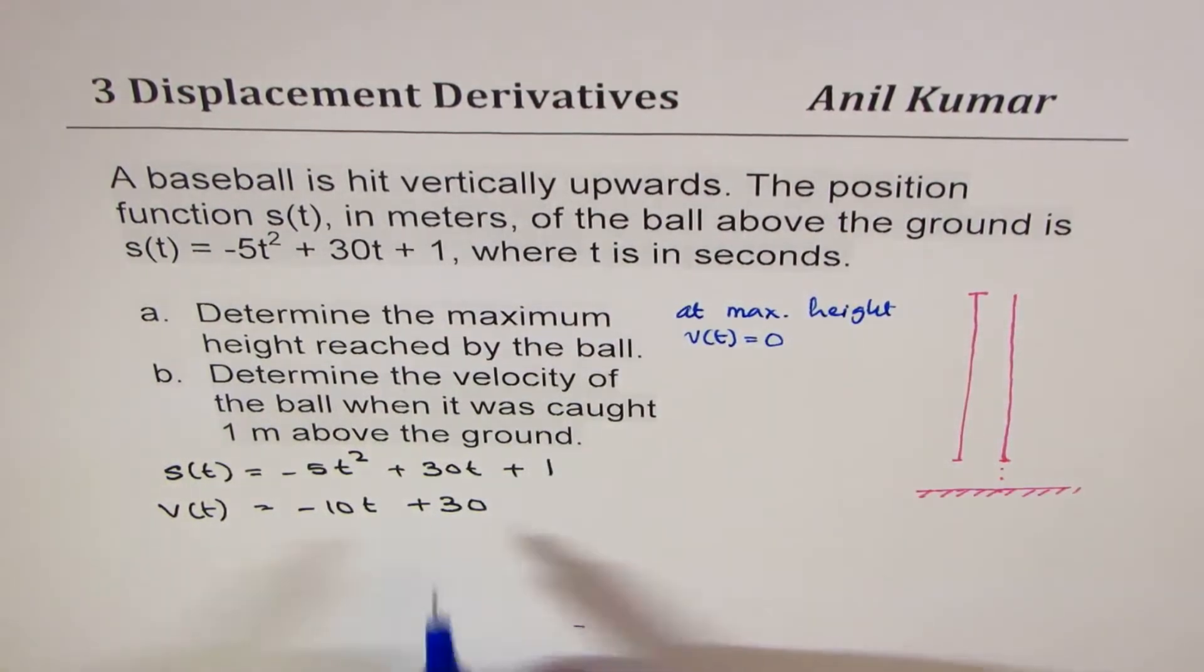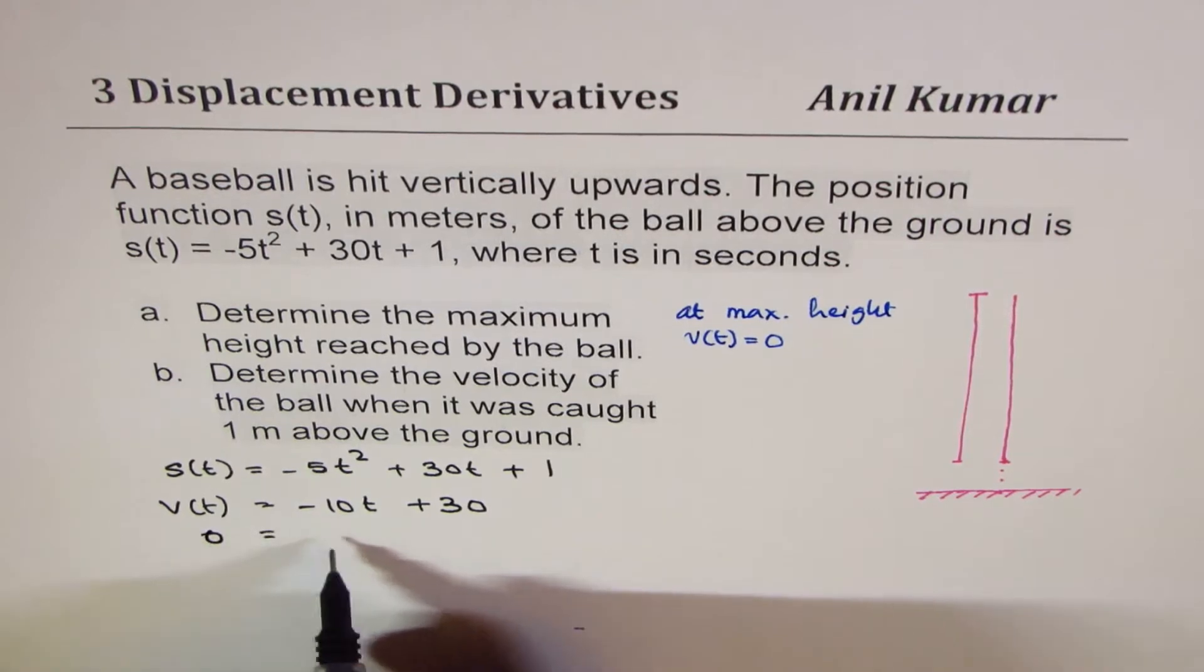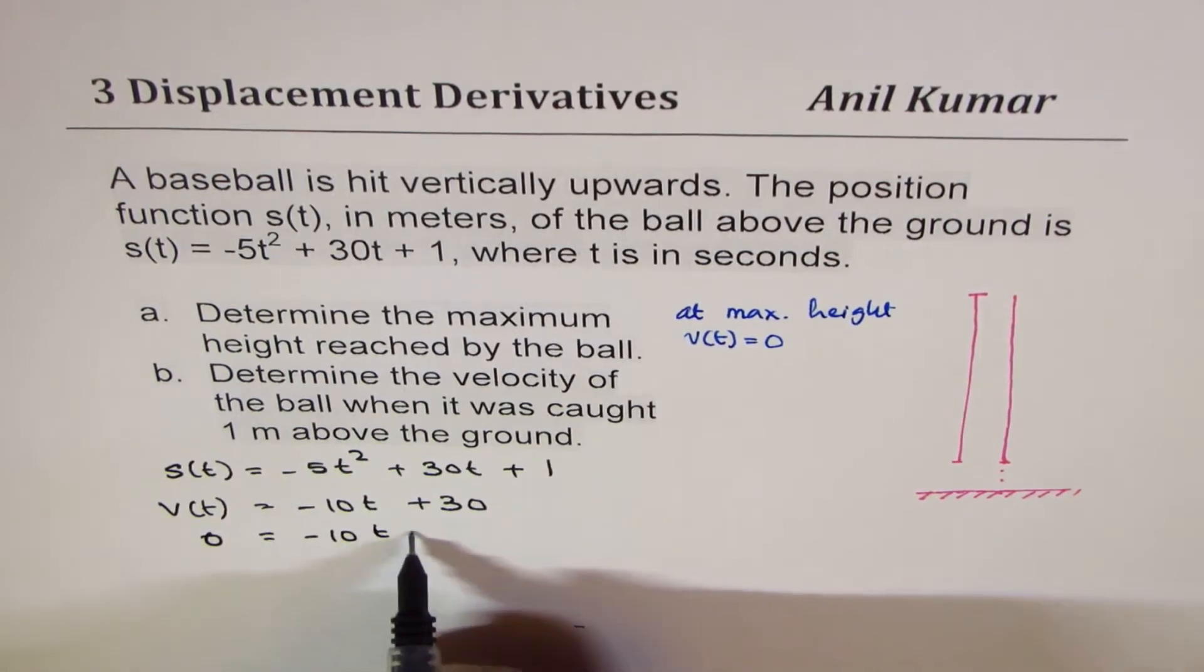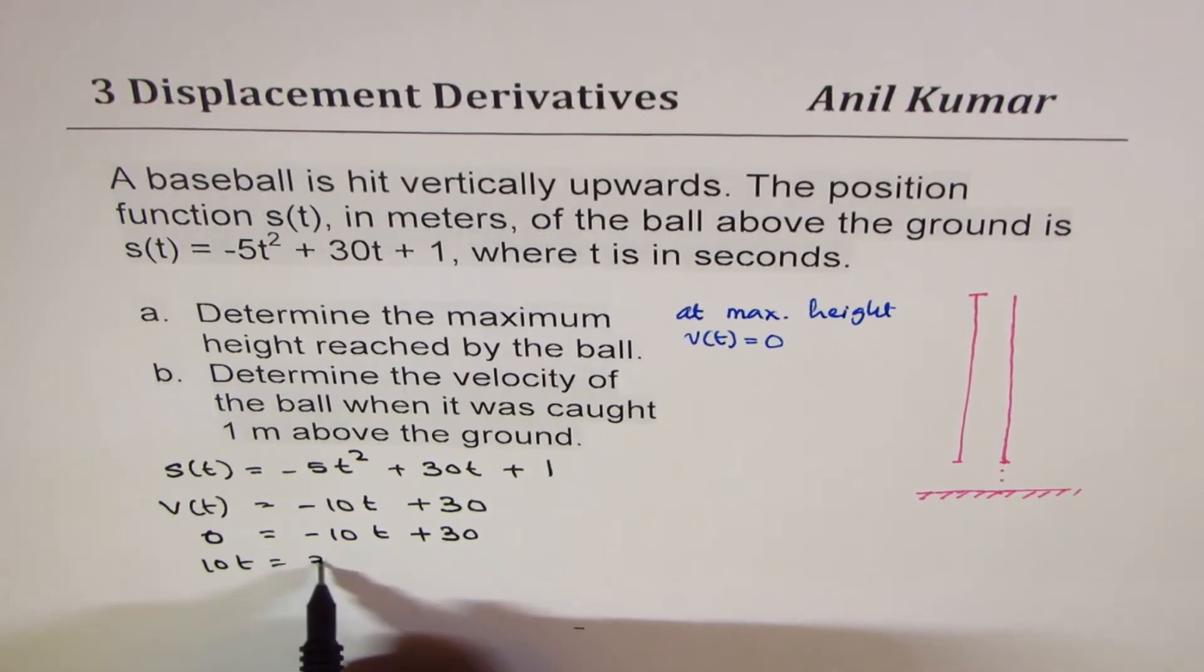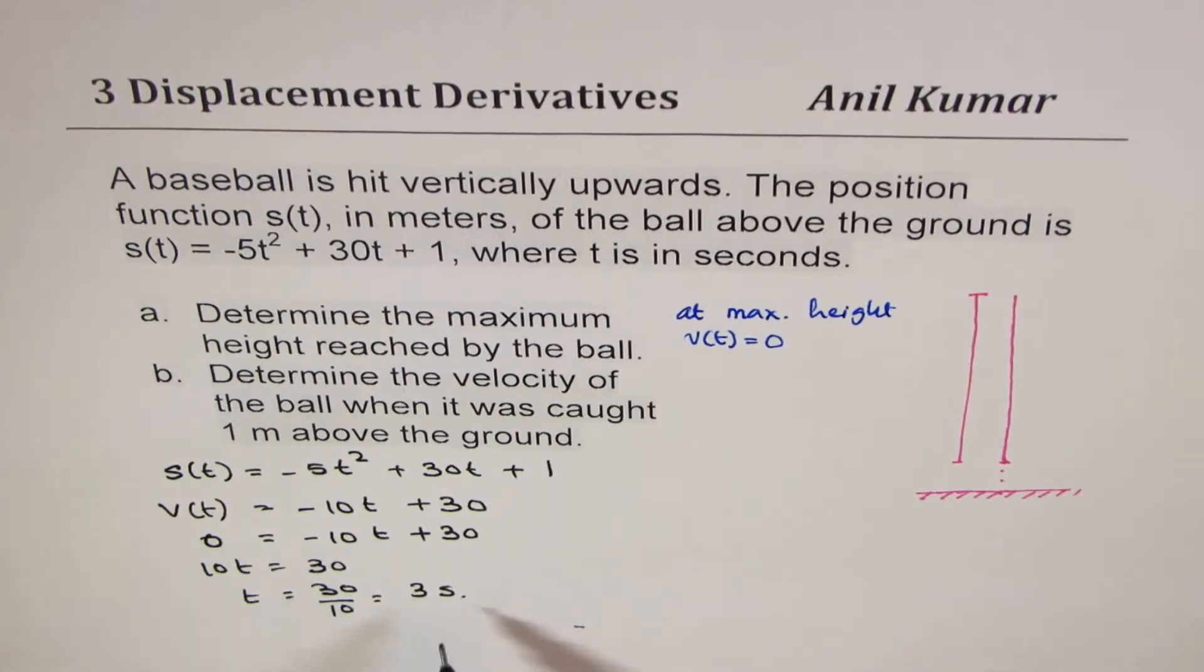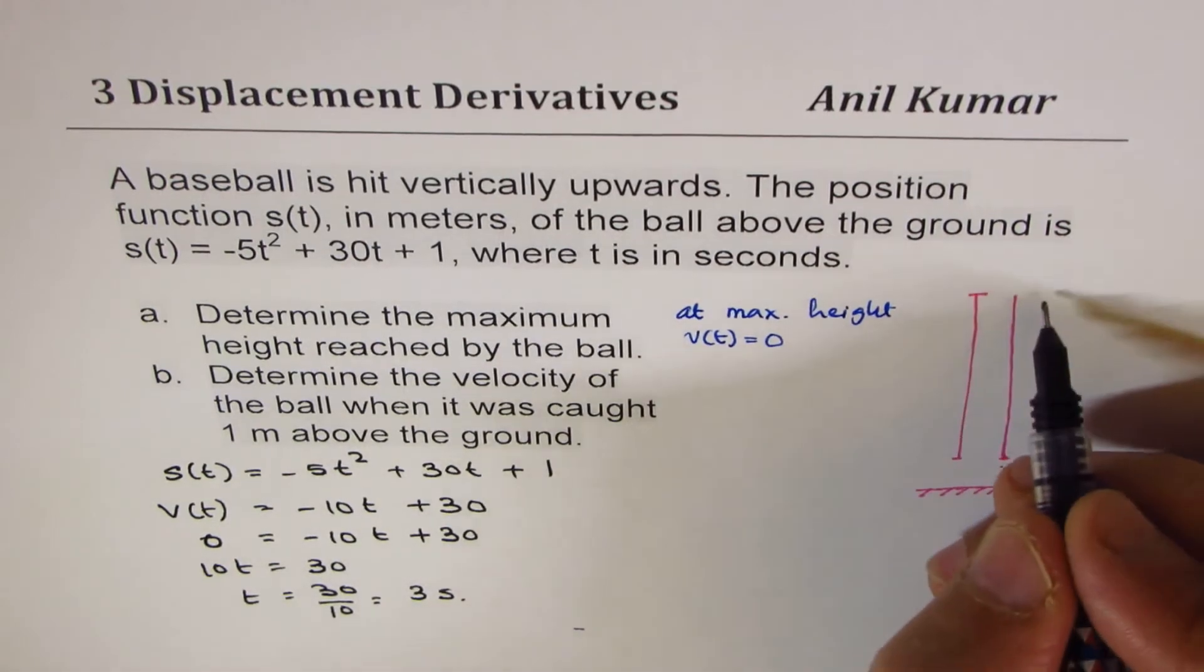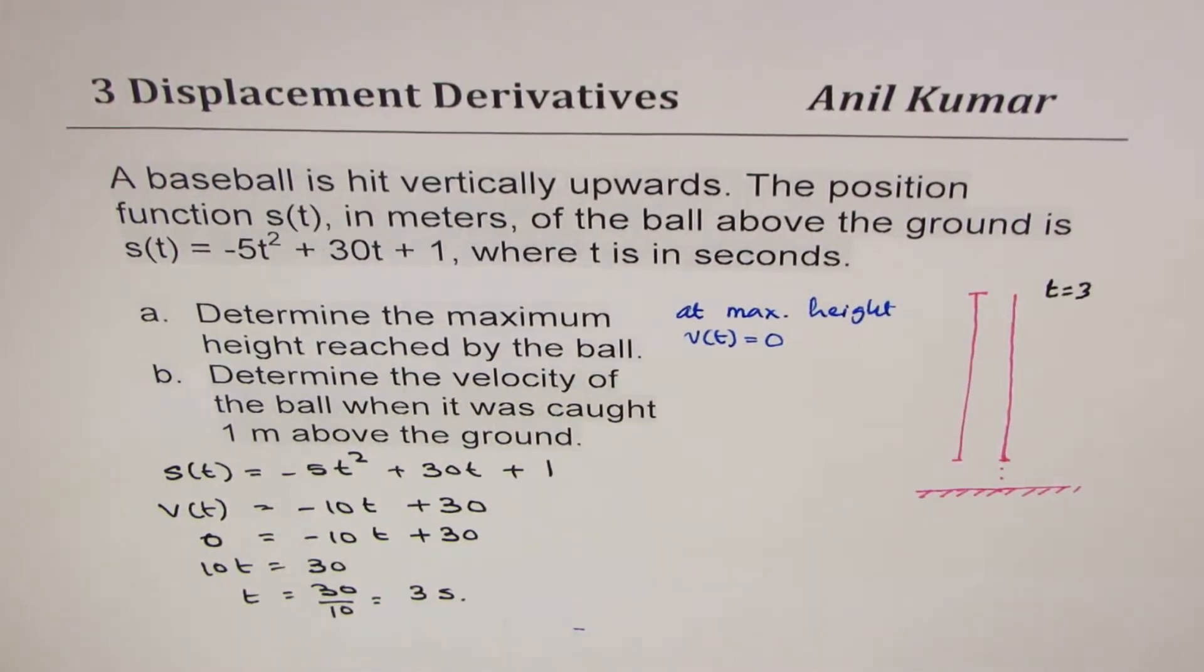We'll put this condition here to find the time when it reaches the maximum height. So 0 = -10t + 30, or 10t = 30, t = 30 divided by 10, which is 3 seconds. So we know that after 3 seconds, ball reaches the maximum height.